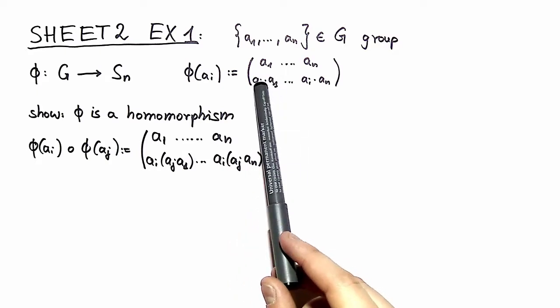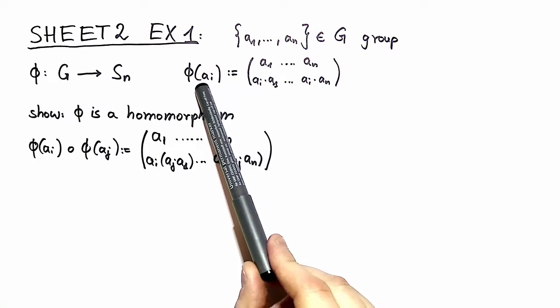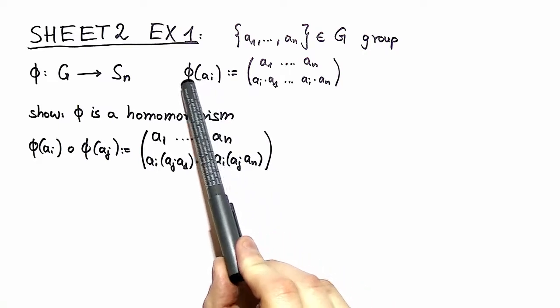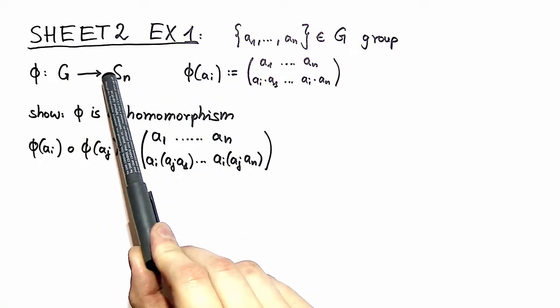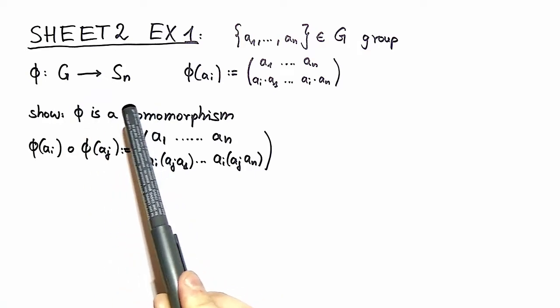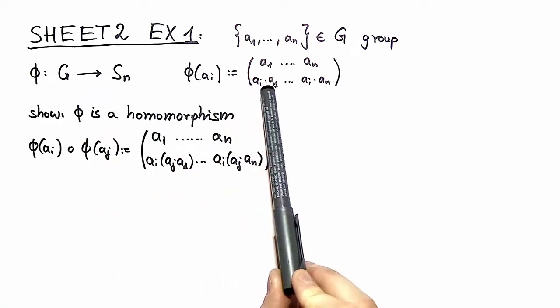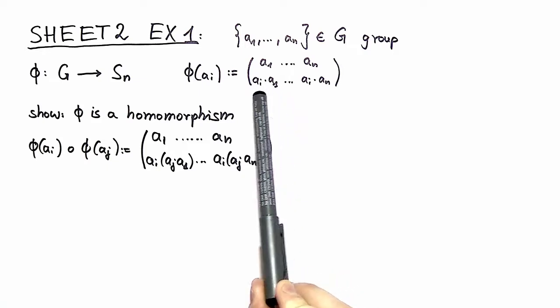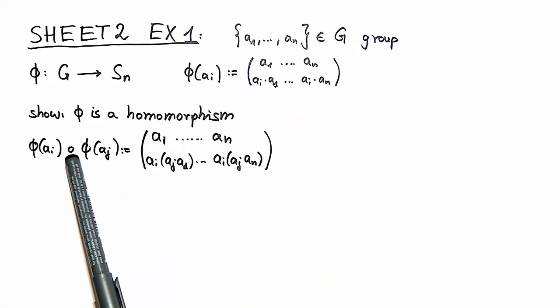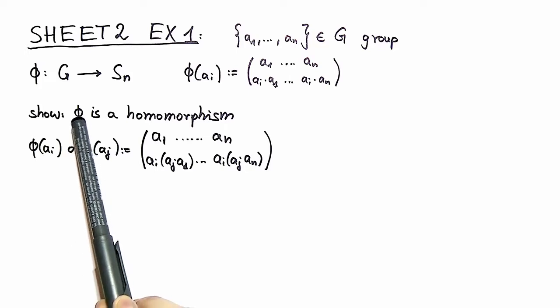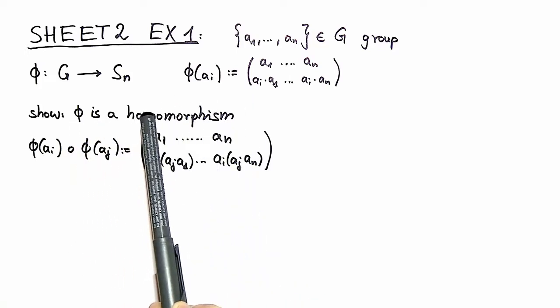In order to show this correspondence we have to define a bijective map associating a permutation to each group element. To show that the multiplication in our group is equivalent to the multiplication in our permutation group we have to show that phi defined over here is a homomorphism.